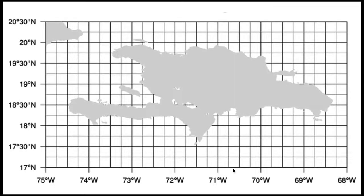A landmark is a monument or fixed object that may be used to determine the location or direction in navigation. The grid is a network of evenly spaced horizontal and vertical lines used to identify locations on a map.